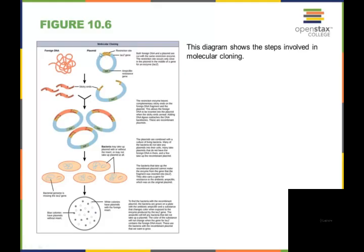Once that occurs, you will end up with complementary sticky ends. The restriction site is only going to occur once in the plasmid in the middle of the gene for the enzyme LacZ. So you would specifically, when you're choosing the enzyme, you would know the sequence that you wanted to cut, and you just order the appropriate enzyme to do that.